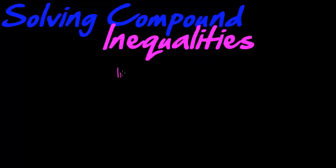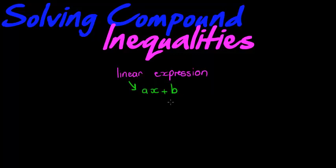Well, it is the following: it is a linear expression. Hopefully by now you know what we mean by a linear expression — it means it is something of the form ax plus b. If you simplify it, it comes down to something like ax plus b, where a and b represent constants. It would be numbers like 2x plus 1 or 5x minus 4.